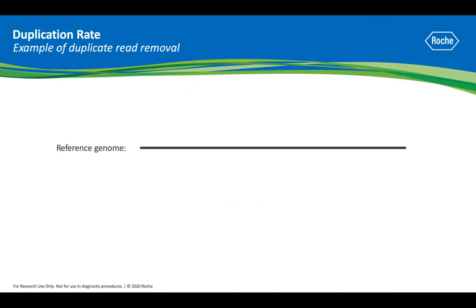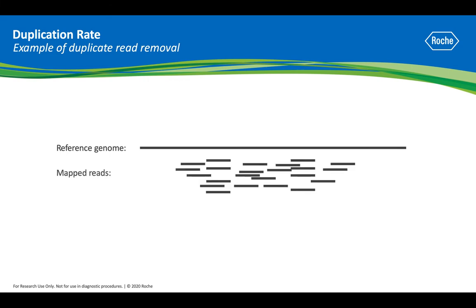When assessing sequencing coverage, we start with the reference genome that the sequencing reads will be mapped to. To get the most out of your sequencing resources, you want the majority of sequencing reads to map to unique locations on the reference genome. Duplicate reads, shown here in blue and green, map to precisely the same location as other reads, and thus they provide no new sequencing information.